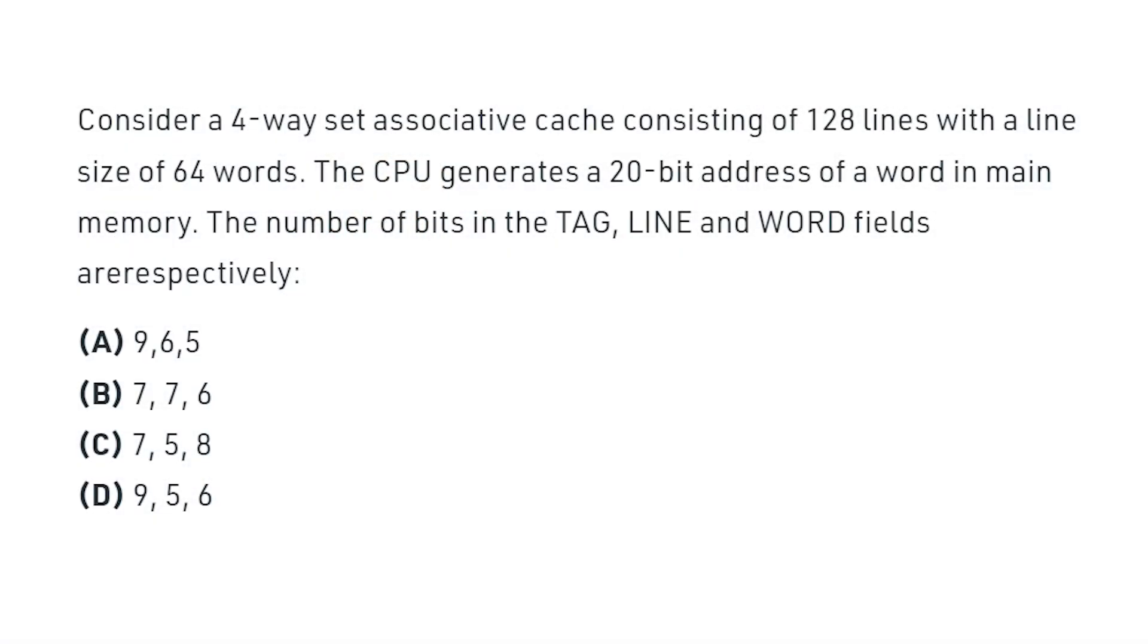Consider a 4-way set associative cache consisting of 128 lines with a line size of 64 words. The CPU generates a 20-bit address of a word in main memory. The number of bits in tag, set and word fields are respectively.